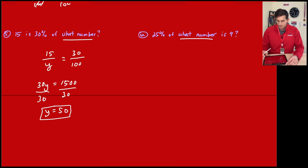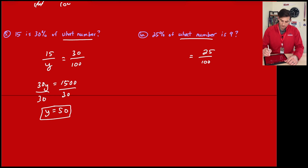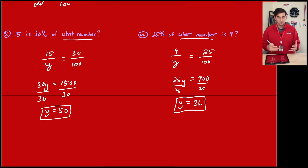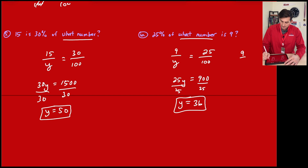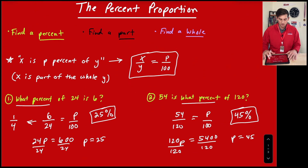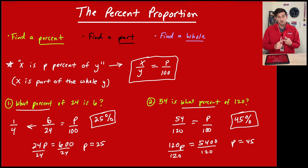Number six: '25% of what number is 9?' We have 25 over 100, and 9 is 25% of what. Cross multiplying: 25y equals 900, then dividing by 25 gives y equals 36. We could also think of 25 over 100 as one-fourth, so 9 over y equals 1 over 4 — multiplying by 9 gives 9 times 4 equals 36. That's the percent proportion: we can use it to find a missing percent, a missing part, or a missing whole.